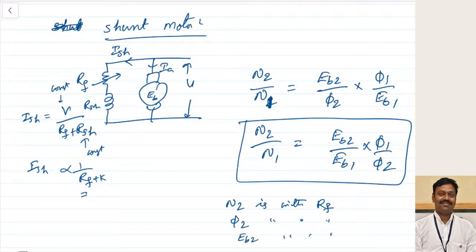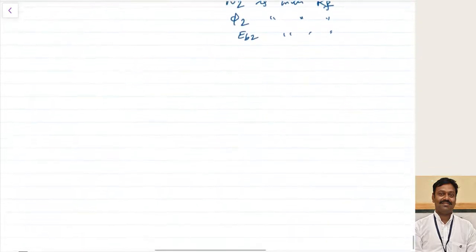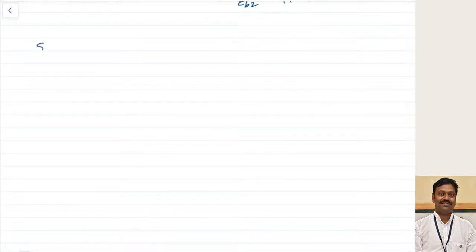Generally the value of Eb2 changes a little when the field is changed because speed changes. Here armature reaction is neglected. That is the case for the shunt machine. Now let us see the case of the series motor.